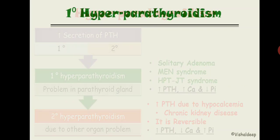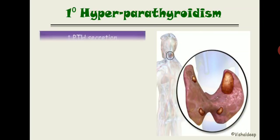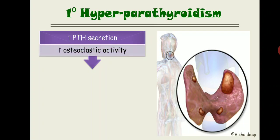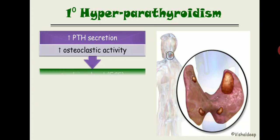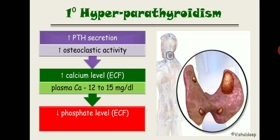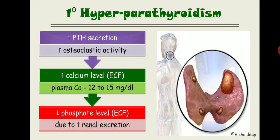In primary hyperparathyroidism, increased PTH raises osteoclastic activity. Osteoclasts resorb more bone, releasing more calcium into circulation, eventually raising calcium to 12–15 mg/dL. Phosphate is also released from bone, but in the kidney calcium gets reabsorbed while phosphate is excreted, so phosphate level decreases.